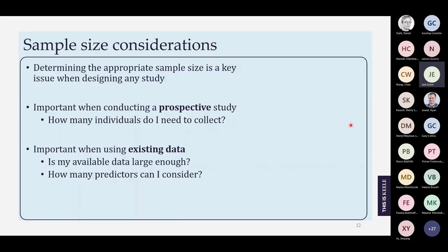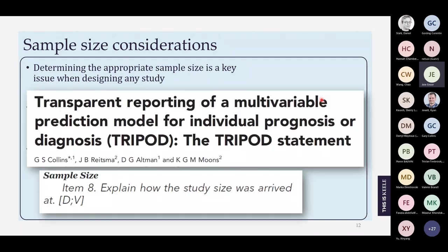Sample size is really important — not just in prediction modeling but in any study. In terms of prediction modeling, it matters when we're prospectively collecting patients to develop a model: how many do we need to build an adequate model to accurately predict individuals' risk? It's also important when we have an existing dataset — is it large enough to build an adequate model? And given the size of data I have, how many potential predictors could I consider including?